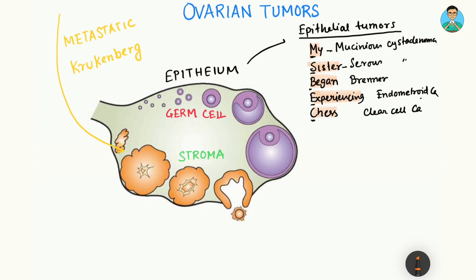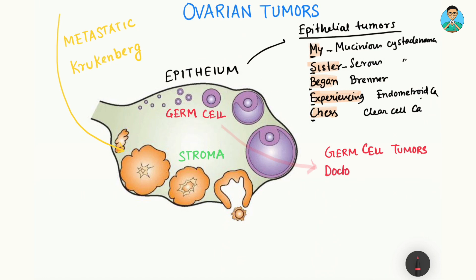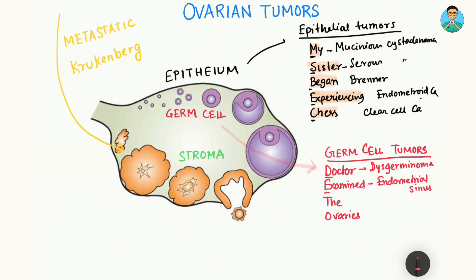So those are the epithelial tumors. Now we will move on to the germ cell tumors. I also have a mnemonic for that: 'Doctor Examined The Ovaries.' D in Doctor represents dysgerminoma. E in Examined represents endodermal sinus tumor. T represents teratoma. O represents ovarian choriocarcinoma.